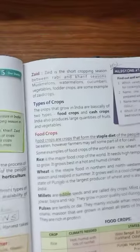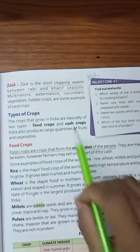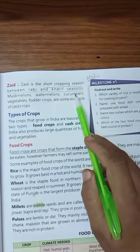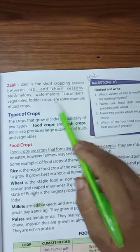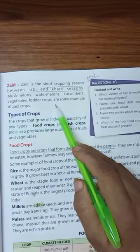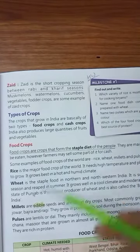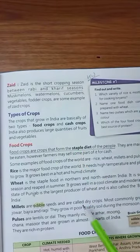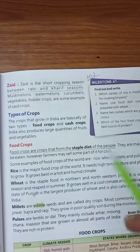Now comes Zaid. Zaid is the short cropping season between Rabi and Kharif seasons. Muskmelons, watermelons, cucumbers, vegetables and fodder crops are some examples of Zaid crops. If an example of Zaid crop is asked, you can write all these. It is a short season between these two main crops.